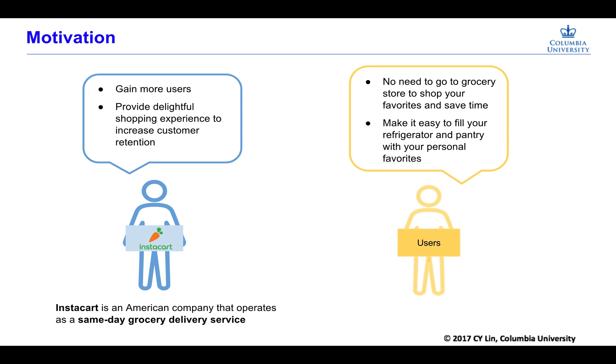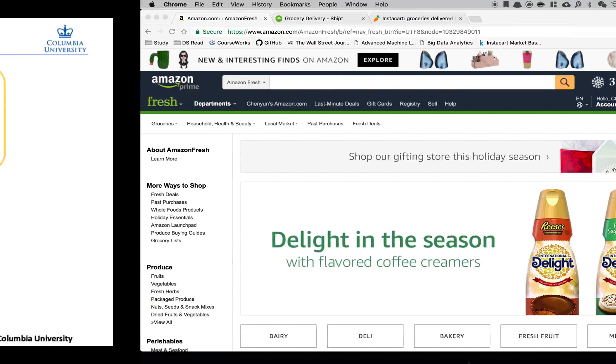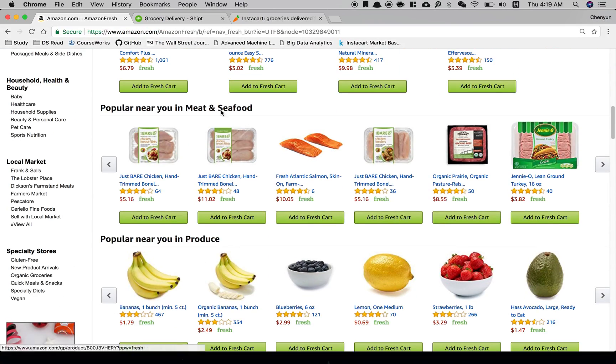A little background about Instacart. Instacart is a same-day grocery delivery service that can save yourself that trip to the grocery stores. It will connect you with personal shoppers in your area to shop and deliver groceries from your favorite stores. Instacart has several main competitors like Amazon Fresh and Shipt.